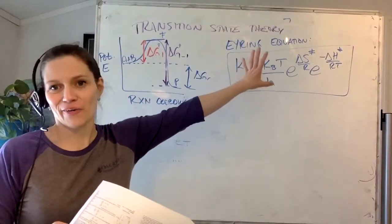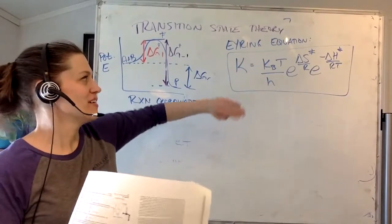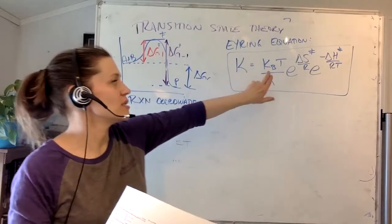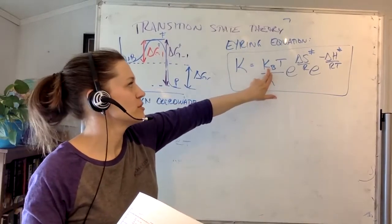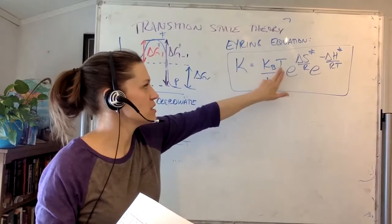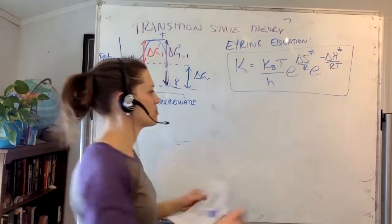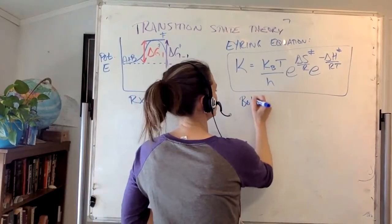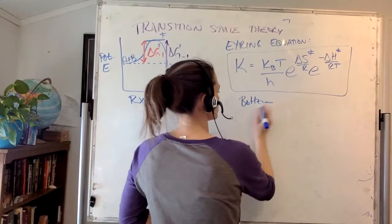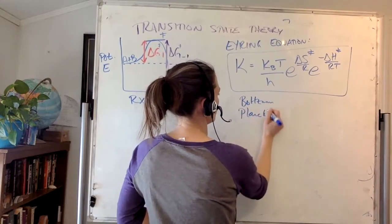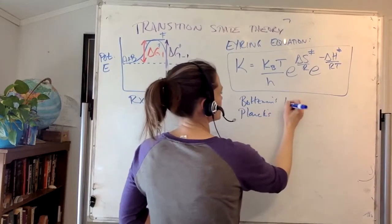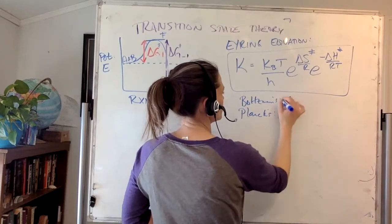Here is the Eyring equation. The reaction rate constant is equal to kBT — so this is Boltzmann's constant times temperature — divided by Planck's constant H. So we have Boltzmann's constant kB and Planck's constant H.